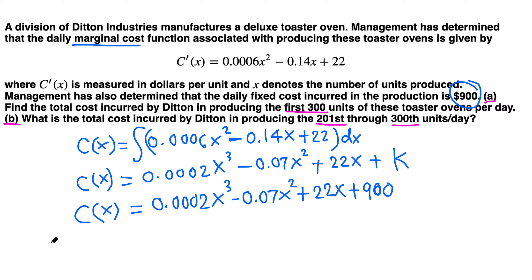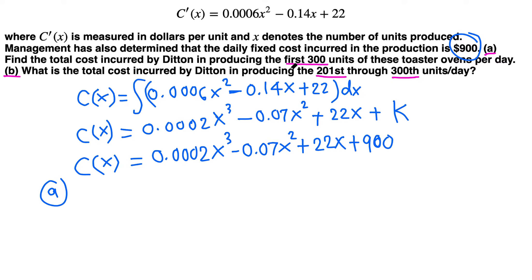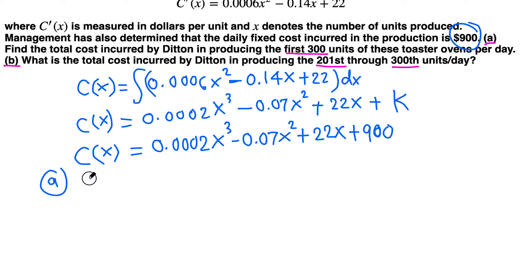In part a, find the total cost in producing the first 300 units. That means evaluate this at 300. Replace x by 300. Just use your calculator: 0.0002 times 300³ minus 0.07 times 300². It comes out to be $6,600. That's part a.